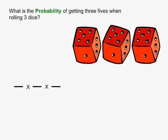In this example, what is the probability of getting three fives when rolling three dice? Rolling three dice is three events, so we put three fraction lines with multiplication symbols between them. The chances of getting a 5 when you roll a die are always 1 out of 6, so all three of the fractions will be equal to 1 over 6.